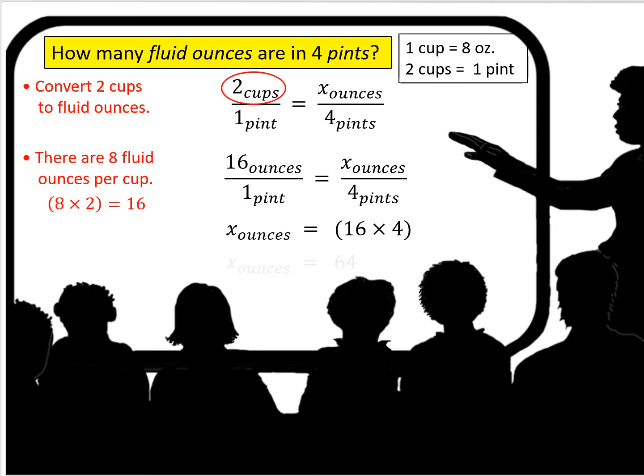Once we have our ratio in the same units of measure, ounces to pints, we can solve for the number of ounces in four pints. X ounces equals 16 times four. There are 64 fluid ounces in four pints.